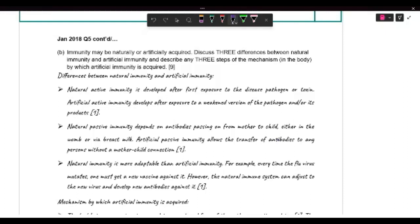Then another big difference between the two is that overall, I should say, is that natural immunity is more adaptable than artificial. For example, when we give the example of the flu virus, every time it mutates, you have to go make a new vaccine against it. However, the natural immune system will naturally adjust to the new virus and develop new antibodies on its own.